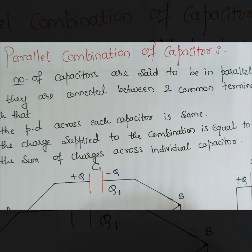So by putting 4 in 3, what do you get? Q is CpV equal to V into C1 plus C2. V goes off, so Cp equals to C1 plus C2. So this is the expression for equivalent capacitance.